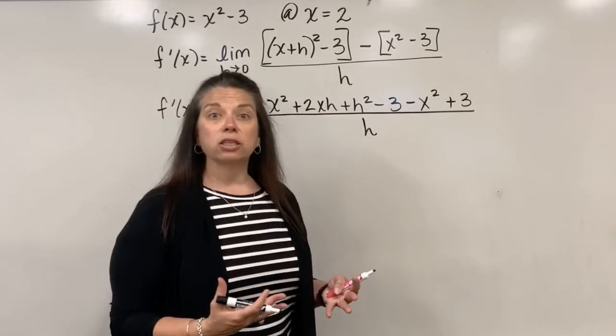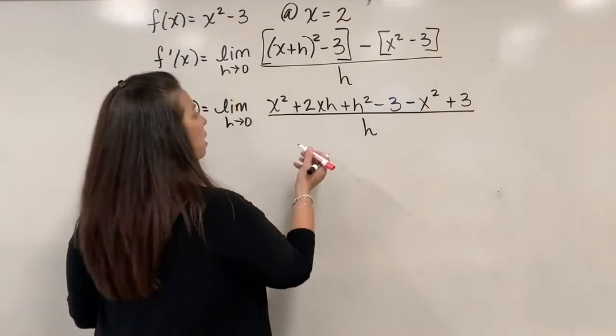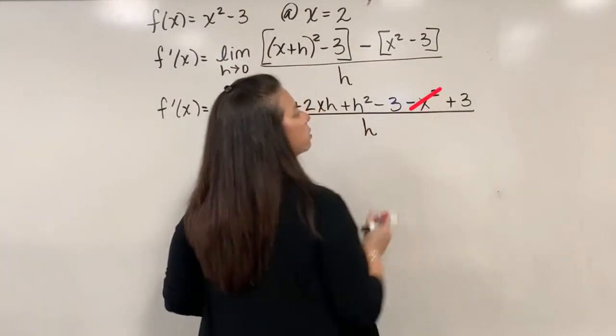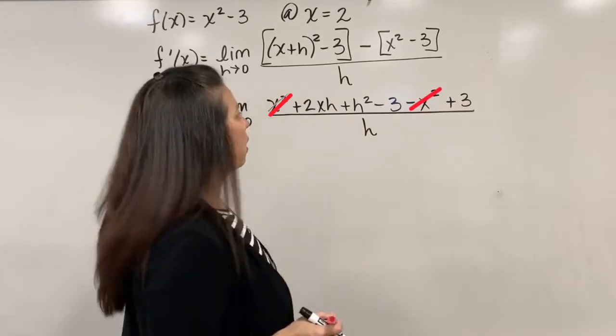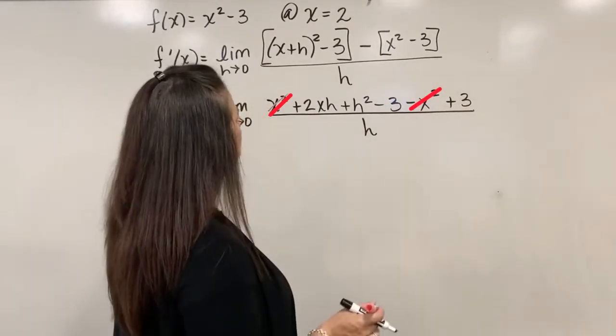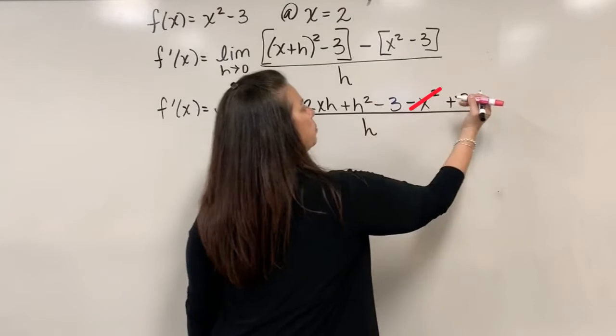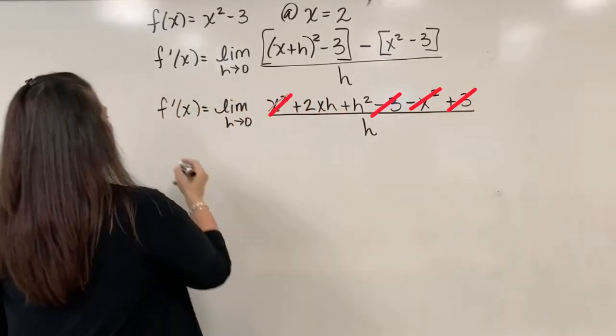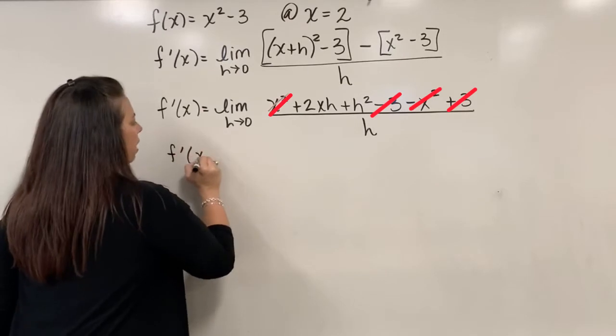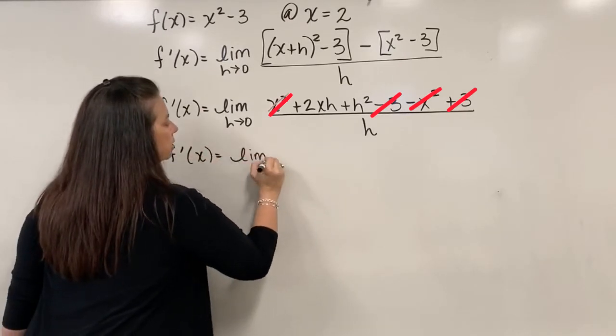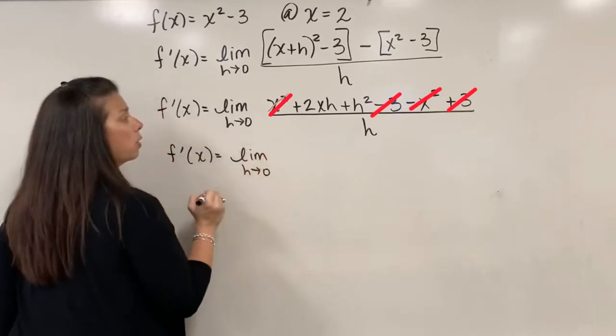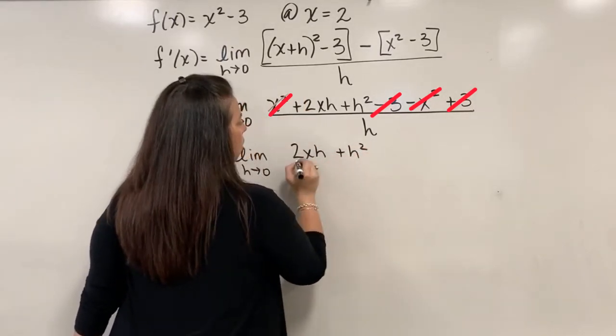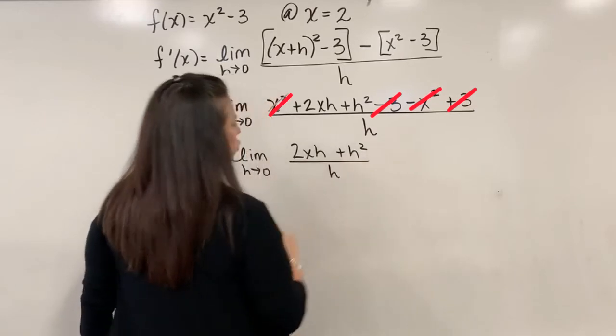And then again, just looking at the terms that we have, we see a couple things that will subtract off. We have an x squared that later subtracts off with a negative x squared. So those go away. I have a negative 3 plus 3. Those subtract off as well. So now I have f prime of x is equal to the limit as h approaches 0 of 2xh plus h squared, all divided by an h.